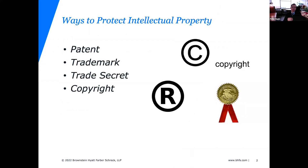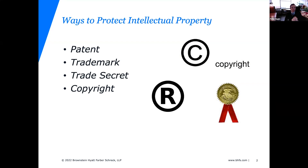We'll be focusing today on the four main schemes for protecting intellectual property in the U.S. and most foreign jurisdictions. These are patent, trademark, trade secret, and copyright. Each of these plays a role in protecting intellectual property, but they all protect different things and have different benefits and drawbacks for the business owner or whoever is trying to protect the intellectual property.